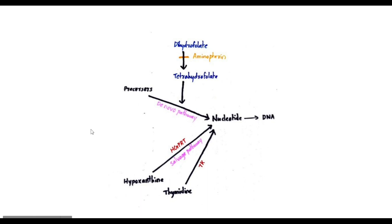Now we are going to understand the basis and principle of hybridoma technology. There are two pathways: the de novo pathway and the salvage pathway. These two pathways are used for the synthesis of nucleotides, which are then used in DNA synthesis. The de novo pathway involves the synthesis of nucleotides from precursors.